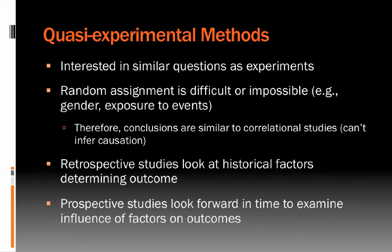Two types of quasi-experimental methods are retrospective and prospective. Retrospective studies look at historical factors and historical data to determine whether things are associated. Prospective studies look forward in time to see whether different variables might influence outcomes. Looking at exposure to a traumatic event like 9/11 could be an example — from the time of that experience moving forward in time, examining what impact it has on health outcomes.